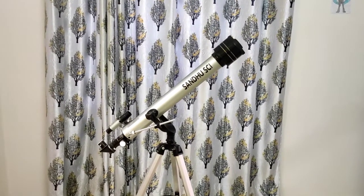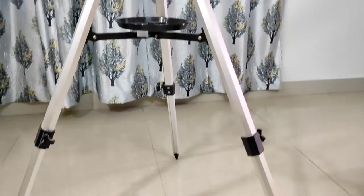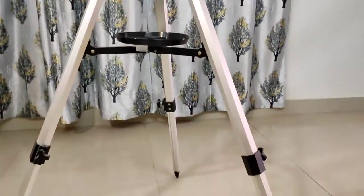Starting from the very bottom, we can see that there are three legs which support the whole telescope, and all three of them are made of aluminum. They are pretty solid.